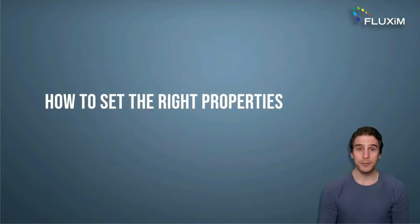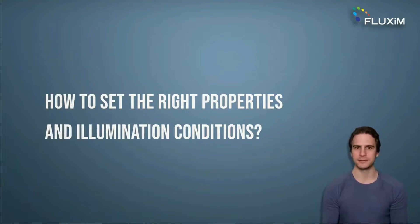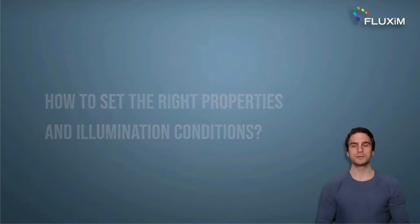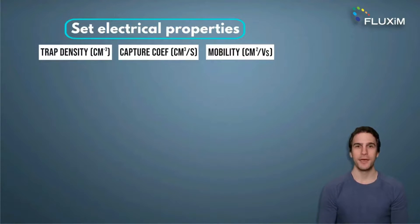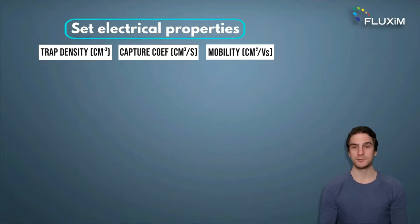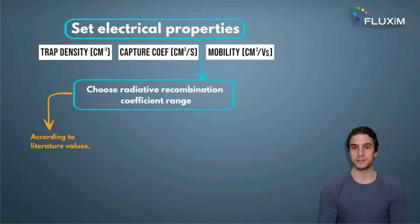So how to set the right properties and illumination conditions? It is actually not that straightforward and it might require some guessing. But after a lot of testing, we want to share a fitting routine that we believe is instrumental for setting a reliable and realistic TRPL simulation. It starts by setting the electrical properties of the light-absorbing material. Then you choose a range of values within literature for the radiative recombination coefficient. It is difficult to precisely quantify it, so you should test the simulation with multiple radiative recombination coefficients.